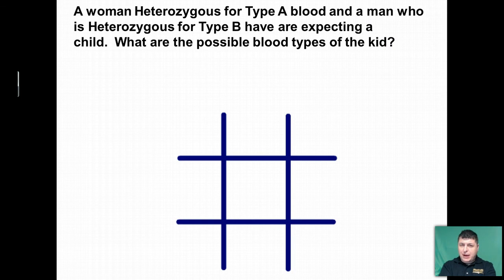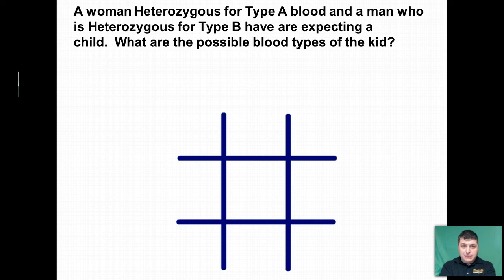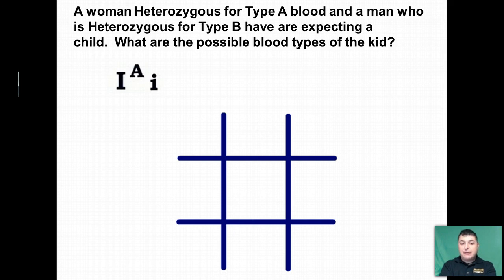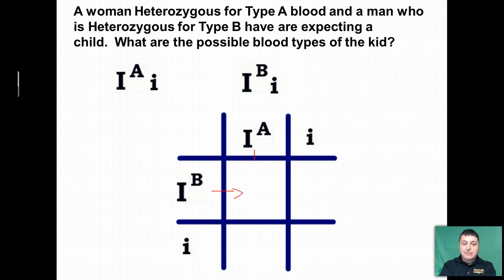How do we do a Punnett square to predict the possible outcomes of a cross when dealing with blood types? Fortunately, multiple allele Punnett squares are performed the same way as any other trait. We follow three steps. First, we figure out the genes of the parents. In this case, we have a woman who's heterozygous for type A blood — she has an A allele and an O allele — and a man who is heterozygous for type B blood, meaning he has a B allele and an O allele. We separate the alleles and place them in the Punnett square, then determine outcomes by combining those alleles and simulating the fertilization event.